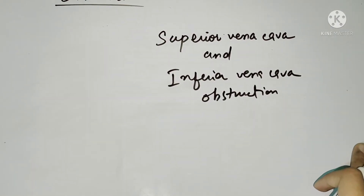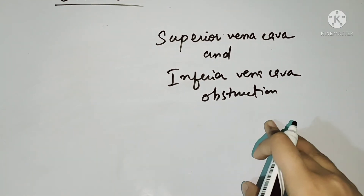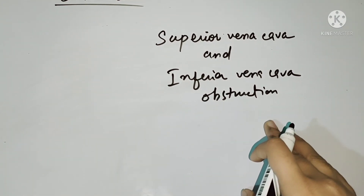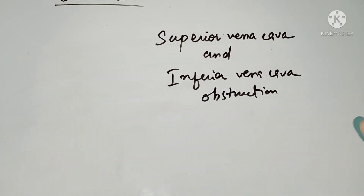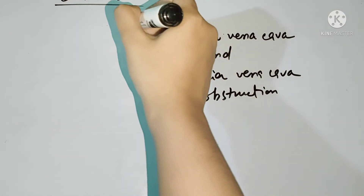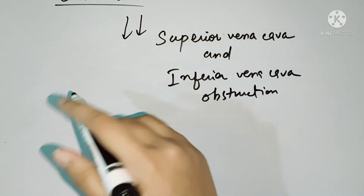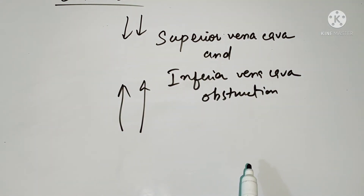Now we will discuss what happens in cases of superior and inferior vena cava obstruction. The superior vena cava drains blood from the upper part of the body, and the inferior vena cava drains blood from the lower part of the body. If there is a superior vena cava obstruction, what will happen to the blood flow?